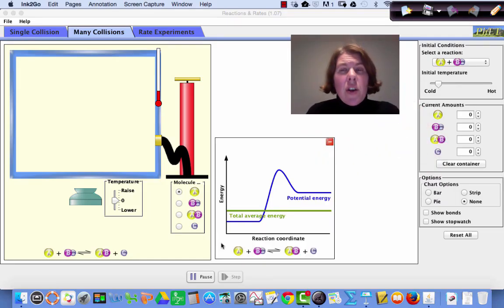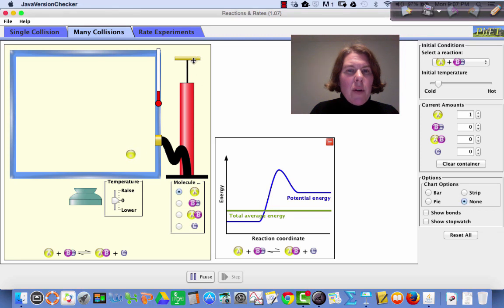So what I'd like to do now is look at a PhET simulation that basically shows how we can see what an effective collision looks like. So into this little reaction chamber that we see right here, I'm going to put in a couple of yellow particles. There's my yellow particles. So that's one of my reactants.